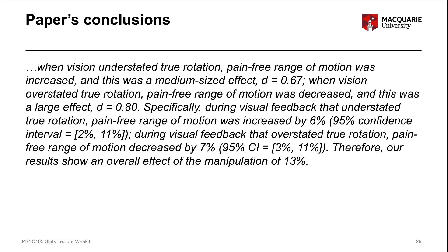The next thing is showing an actual write-up of these results from the paper itself, to show how the way they express results is very similar to what we just covered. Reading from their results section: when vision understated true rotation, pain-free range of motion was increased, and this was a medium-sized effect, Cohen's D equals 0.67. When vision overstated true rotation, pain-free range of motion was decreased, a large effect, D equals 0.8. During understated feedback, pain-free range of motion increased by 6%; during overstated feedback it decreased by 7%, giving an overall manipulation effect of 13%.